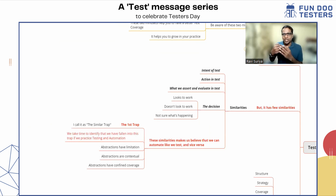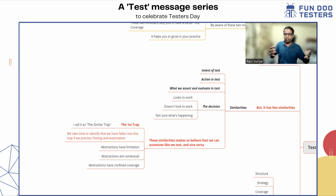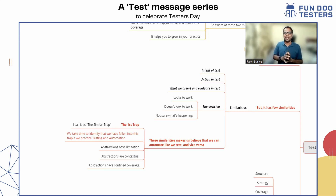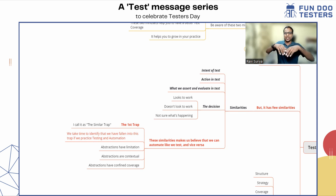When I started writing automation, I wrote it all on one page and ran it — that was my plan — but it did not scale up. I did automation like I tested, and it did not go well. It took me years to learn this. When I practice testing and automation, I know now that abstractions are limitations, abstractions are contextual, and abstractions have confined coverage. That applies to both automation and testing, but they are two different mindsets.